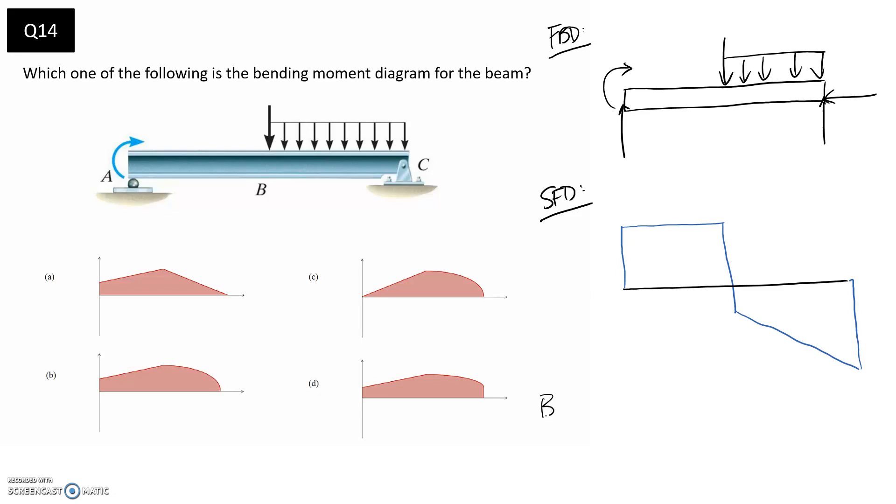So for the bending moment diagram we know that what contributes to it is the areas within the shear force diagram as well as any moments that we have on the free body diagram. So you can see here we have one moment so we're going to need to make sure that we take account of it.